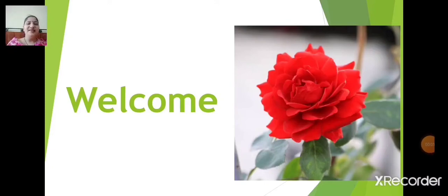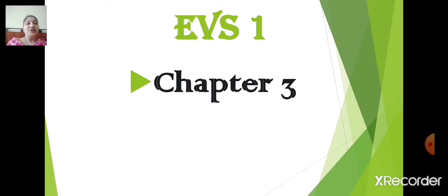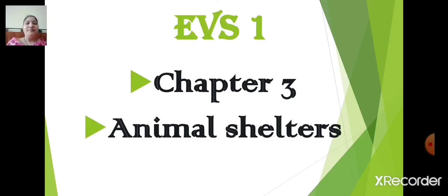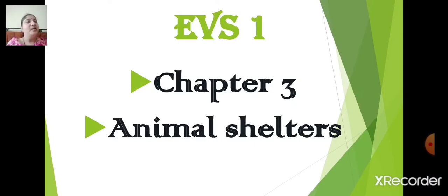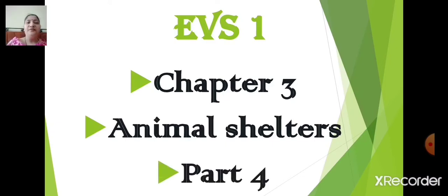Sairam children, welcome back and have a wonderful day. In today's class of EBS 1, we will continue with chapter number 3, Animal Shelters. Animals need shelter because they need a suitable place to survive themselves and to feed their young ones. Let us learn more about animals who build shelter for themselves in part 4.